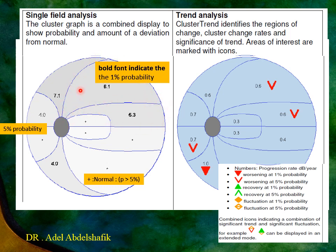The new Octopus software also gathers adjacent points and averages them to get better information. If the value is within normal you get a plus sign, but if it is higher than normal you get a number. This number will be in regular font if the probability is five percent, or bold if the probability is one percent. When this is repeated several times you have a trend analysis.